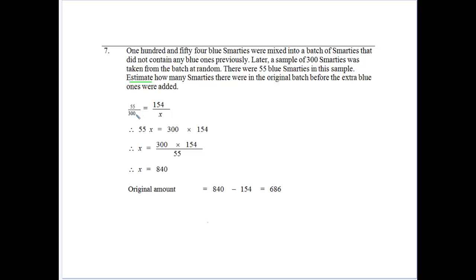So we've got the 55 out of 300 that we had for blue Smarties. And then that means we've got 154 out of what was in the original amount. Because they should be similar ratios. So what we've got to do is work out what X is.